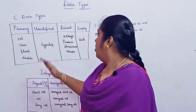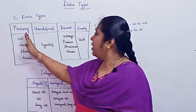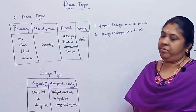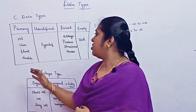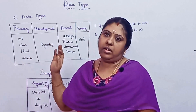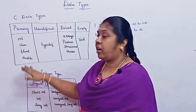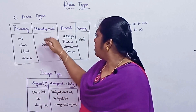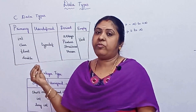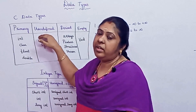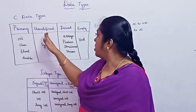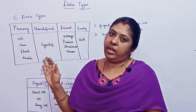Data types in C consist of four categories: primary, user-defined, derived, and empty. In the primary data type we have int (integer), character, float, and double. In the user-defined category we have typedef, which allows us to provide user-defined names to data types.